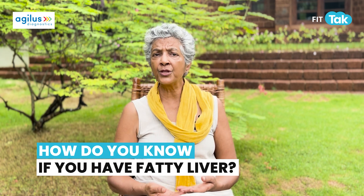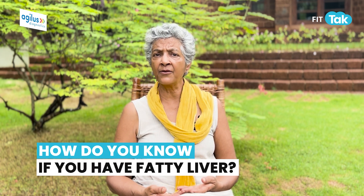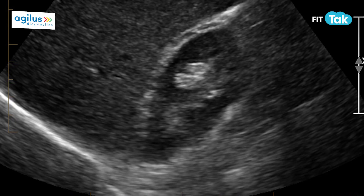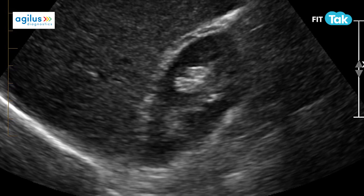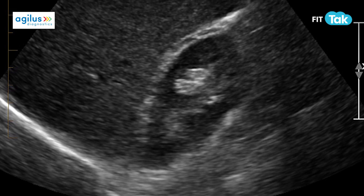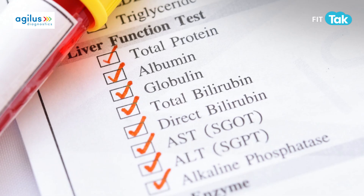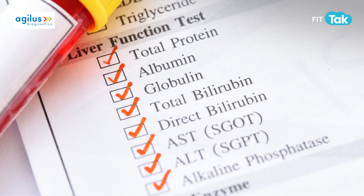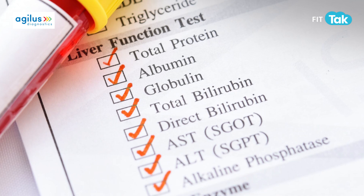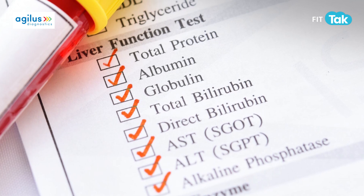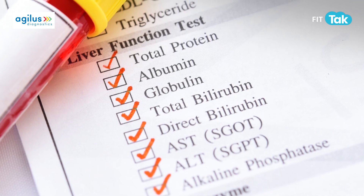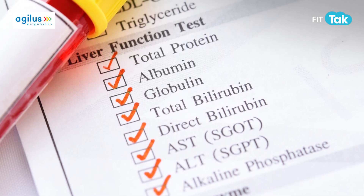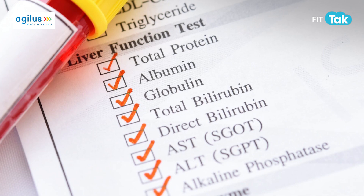How do you know that you have fatty liver? Maybe on a sonography, or maybe just by looking at the liver enzymes — SGOT, SGPT, GGT. When these are high, it indicates fatty liver.